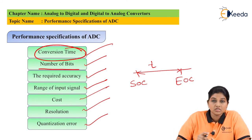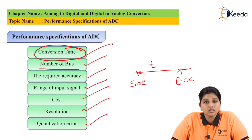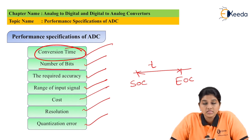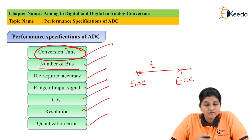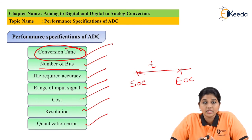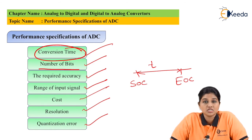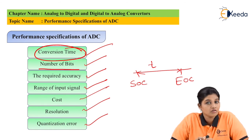The next parameter is the number of bits. The ADC can be 8-bit, 16-bit, or 12-bit. If the number of bits is more, that indicates the resolution of the ADC is also higher. If the resolution is high, it indicates there is less chance of quantization error. What quantization error is, we will see next.